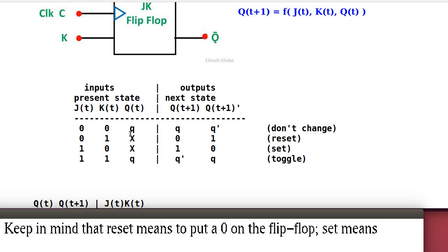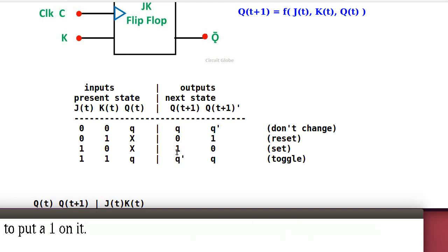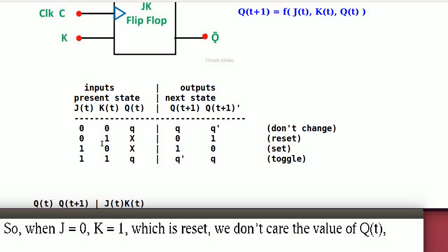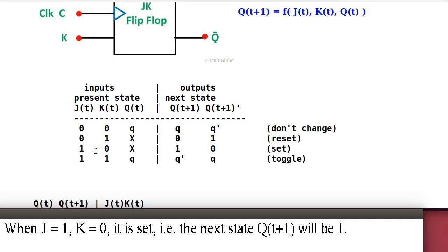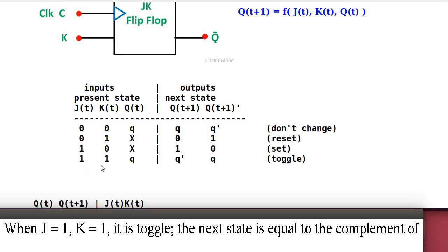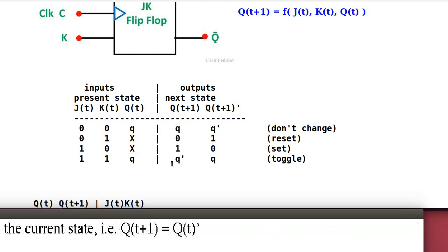Keep in mind that reset means to put a 0 on the flip-flop and set means to put a 1 on it. So when J equals 0, K equals 1, it is reset, so the next state of Q is always 0, and we don't care about the current state — X here means don't care. When J equals 1, K equals 0, it is set, so Q(t+1) will be 1. When J equals 1, K equals 1, it is toggle — the next state is equal to the complement of the current state.